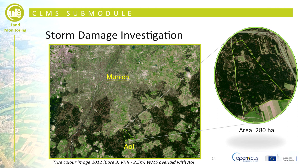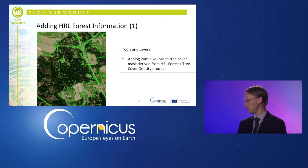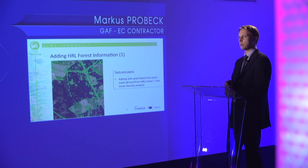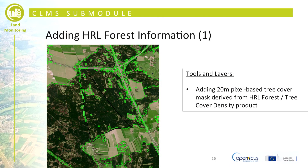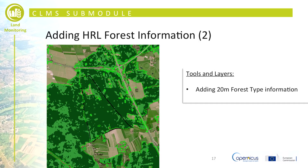The freely available Copernicus data is used as an overview for getting acquainted with the area — here showing the city of Munich with extensive forest areas to the south. In the area of interest, the true color Copernicus image underlies and the forest layer is added on top as green outlined areas. Everything within the green outline is mapped and defined as forest, overlaid as a green outline on the 2.5 meter Copernicus web map service optical image.